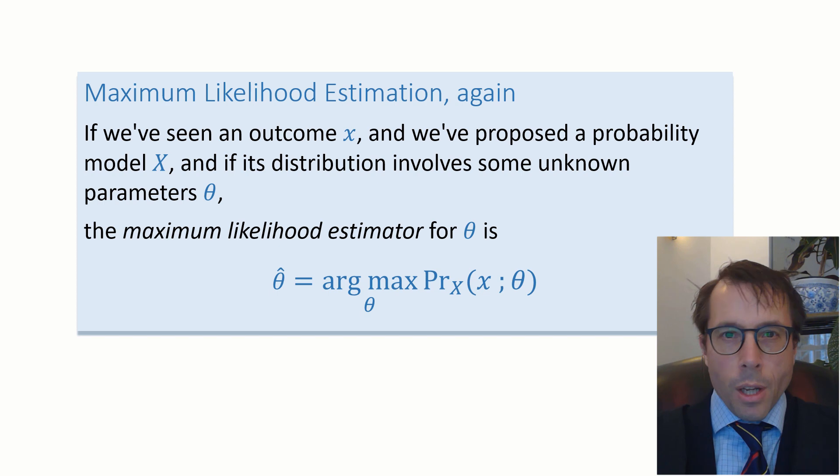Maximum likelihood estimation again. We saw this in the very first video. Let's just look at the proper way of stating what maximum likelihood estimation is. If we've seen an outcome little x, and we've proposed a probability model capital X, and if its distribution involves some unknown parameters theta, the maximum likelihood estimator for theta is the theta that maximizes the likelihood. The point here though is that x could be anything at all. It could be a single value or it could be an entire data set.